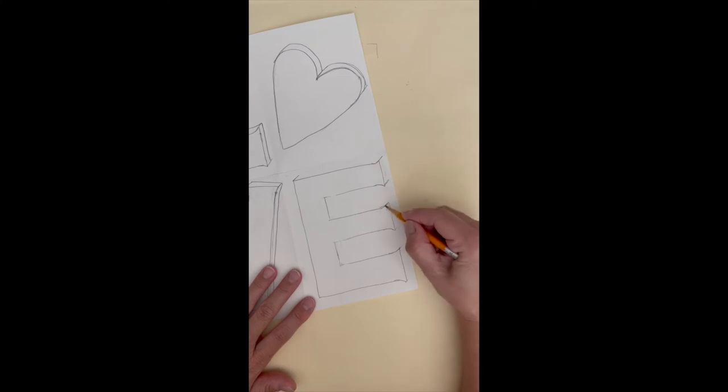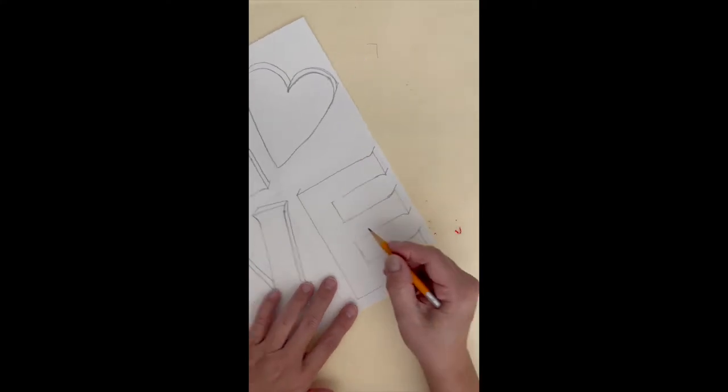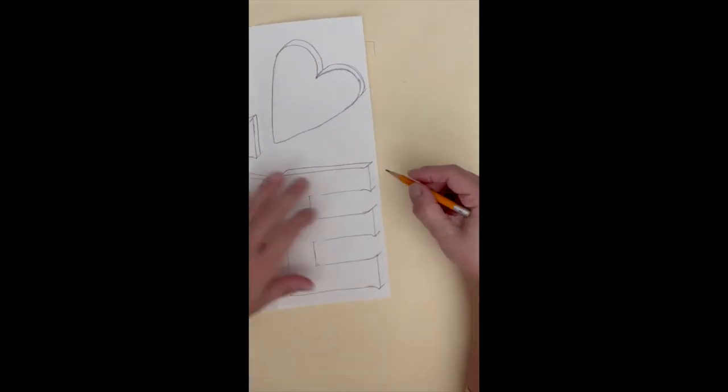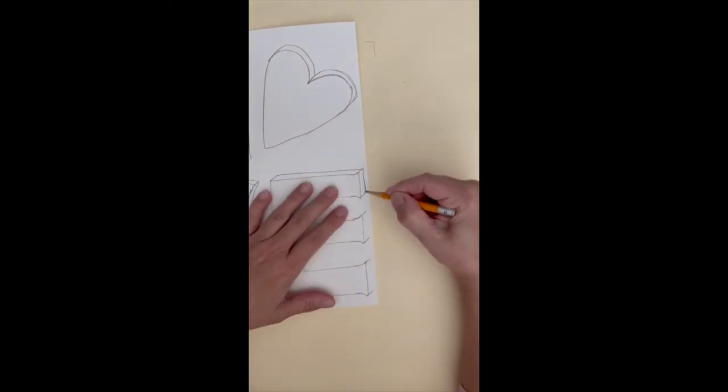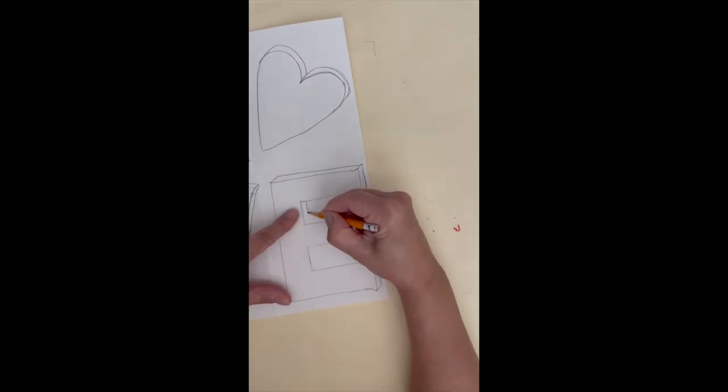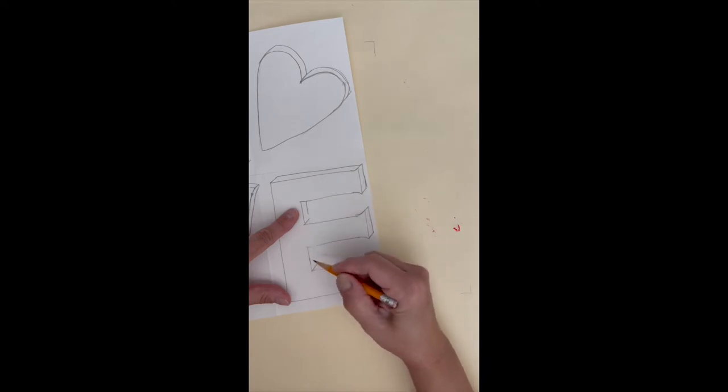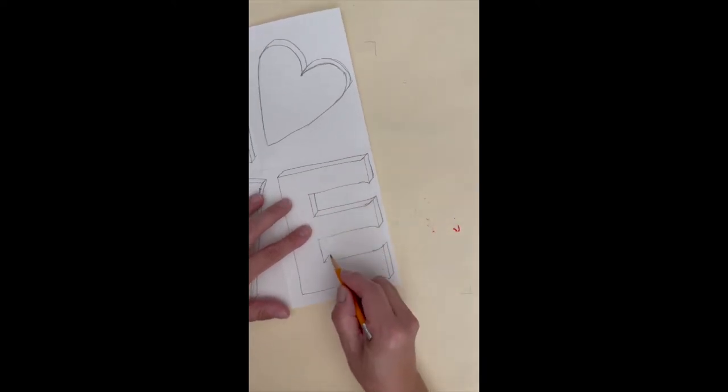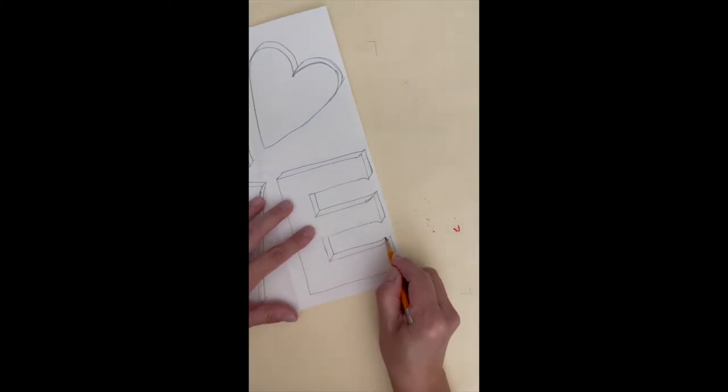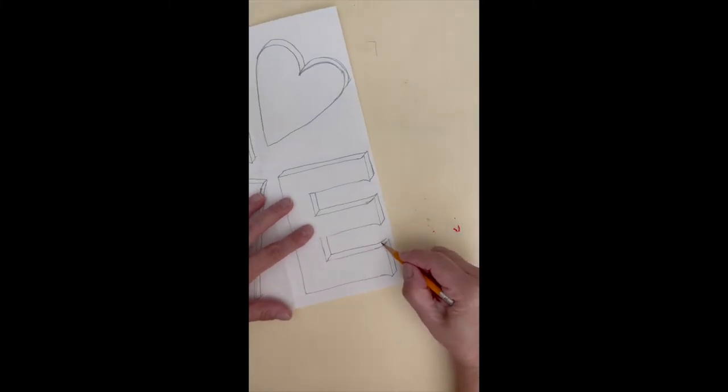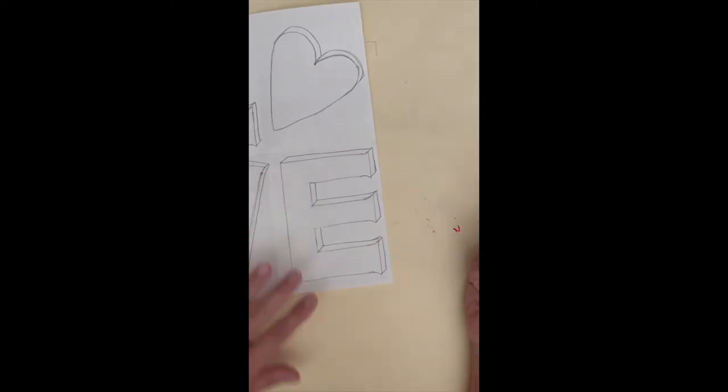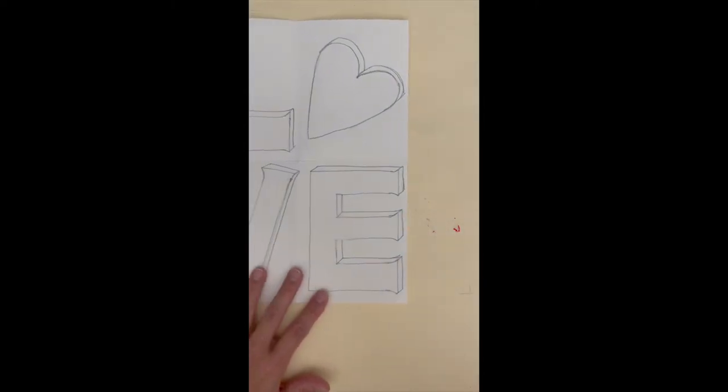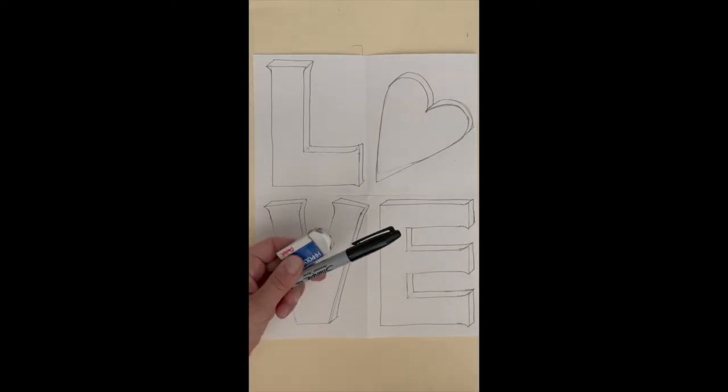Now, let's cut them off. Now my letters are a little less flat and have more depth. Trace and erase.